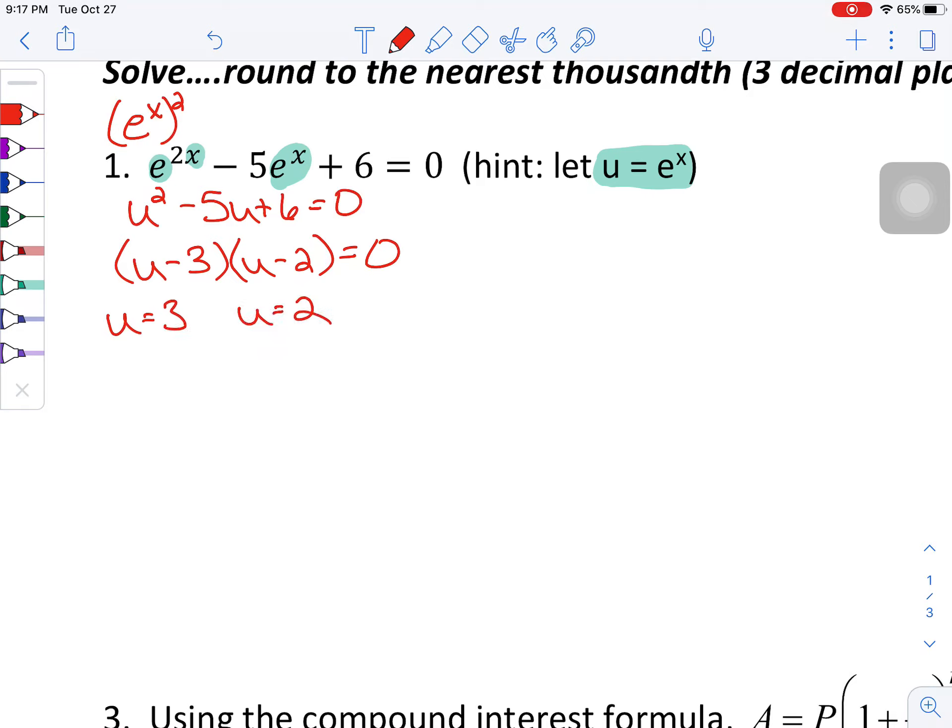But remember, now we want to back substitute and put back in the original problem that we had, which was the e to the x. So we've really got e to the x is equal to 3 and e to the x is equal to 2.